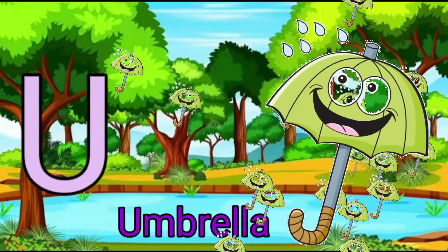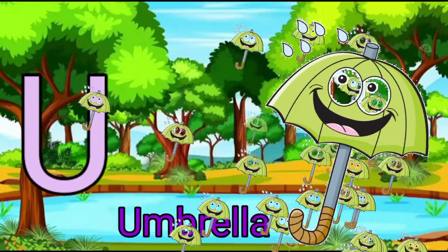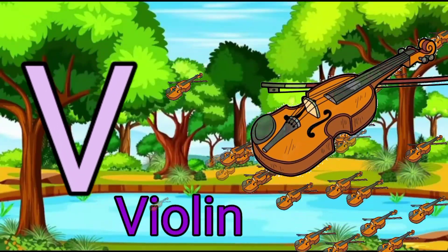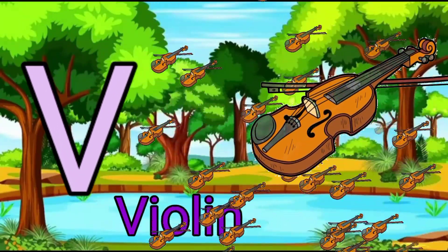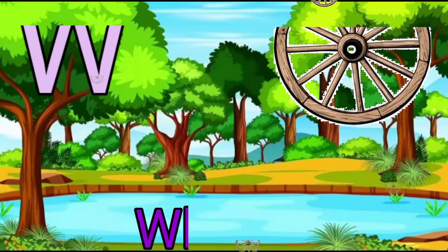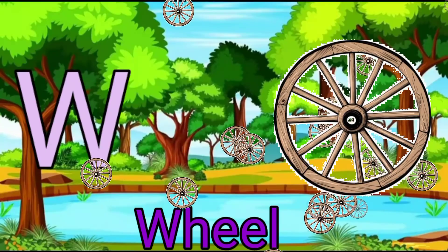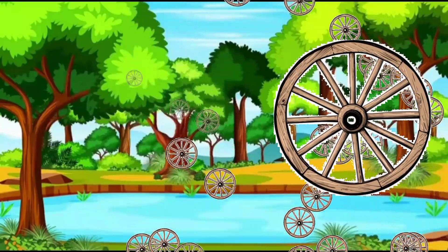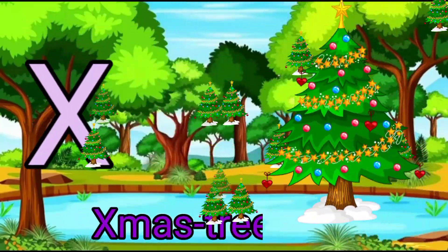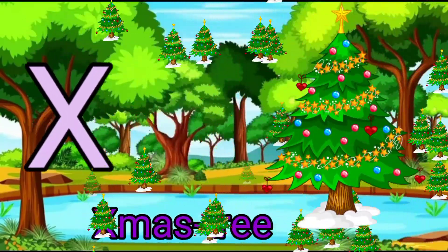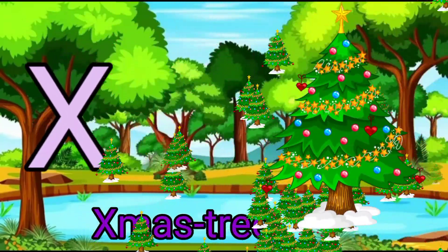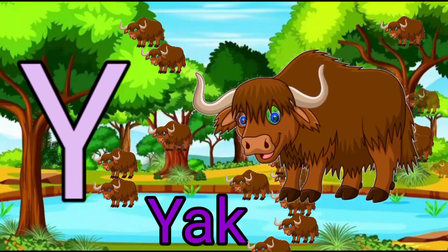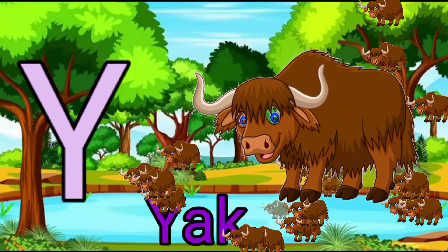U for umbrella. V for violin. W for wheel. X for Christmas tree. Y for yak. Z for zebra.